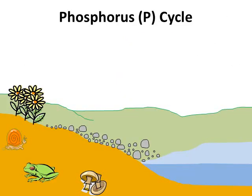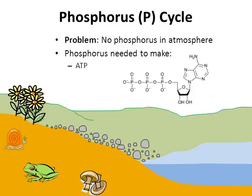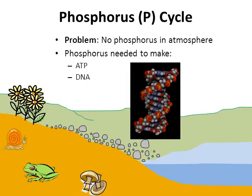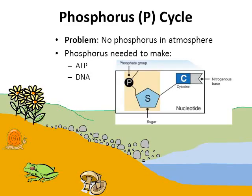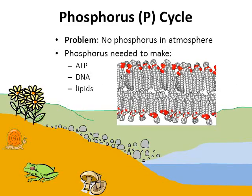The next cycle is called the phosphorus cycle. There's a problem: we need phosphorus, but there's no phosphorus in the atmosphere. We need phosphorus to make ATP — you can see the P in the ATP molecule. We also need phosphorus to make DNA; one part of a nucleotide is called a phosphate group, and combining nucleotides forms DNA. Another reason we need phosphorus is for lipids — the cell membrane is made from a phospholipid bilayer, with phosphorus in it.